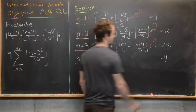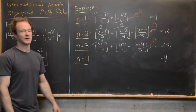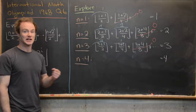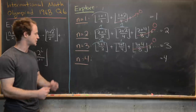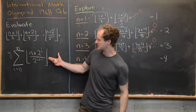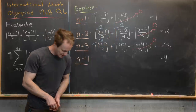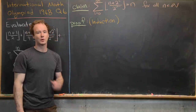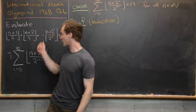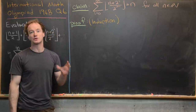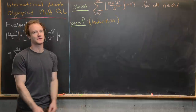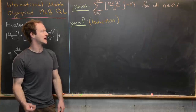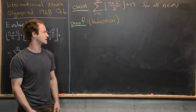For n = 4, the result is 4; for n = 5 it's 5; for n = 6 it's 6. So we can make the claim that the closed form of this sum is simply n, and that holds for all natural numbers n.